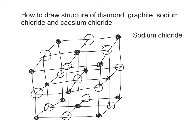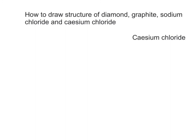Depending on your drawing, you can see each sodium ion is surrounded by six chloride ions, and vice versa. Don't forget your key.